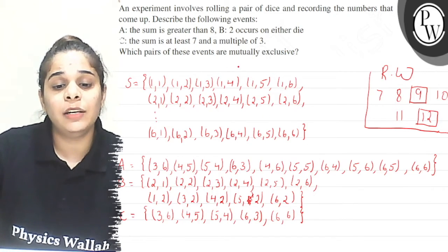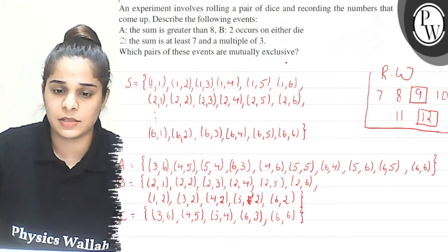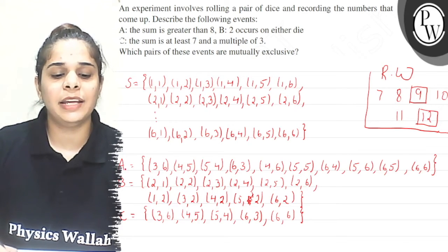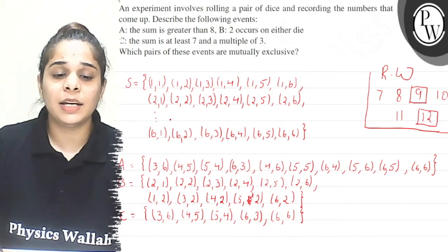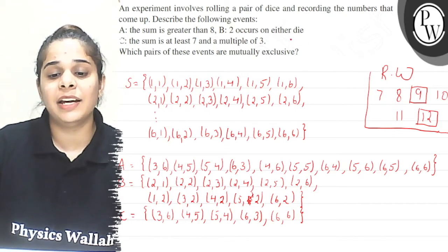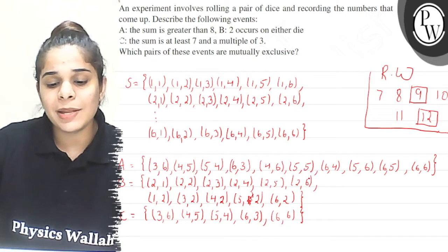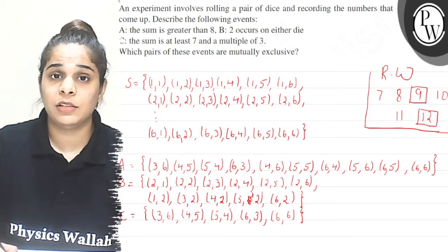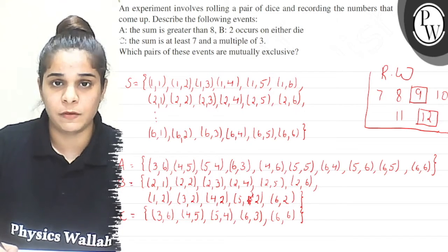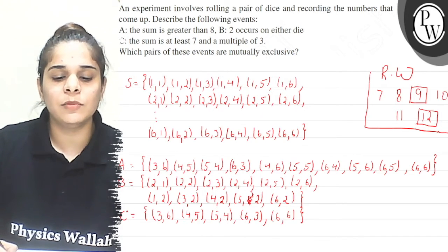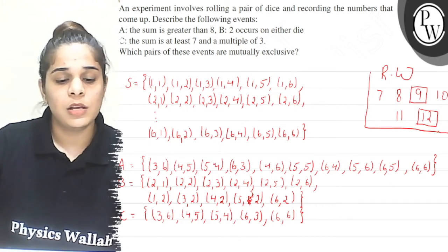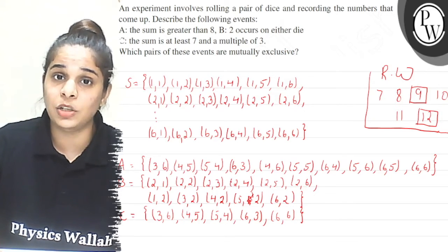Now I have to find which events are mutually exclusive. Let's look at A and B first — do they intersect? No, A and B do not intersect, so A and B are mutually exclusive events. What about A and C? Are they mutually exclusive? No — (4,5), (5,4), (6,6) are in both A and C, so A and C are not mutually exclusive since they do intersect.